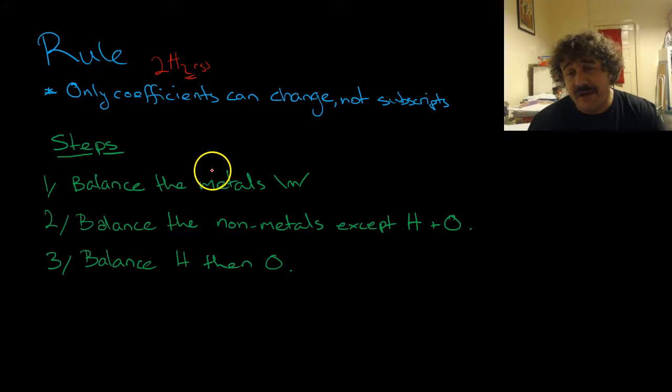Alright, so our steps are: balance the metals, then we balance the non-metals, then we balance the hydrogens, and we finally balance the oxygens. These are the simple steps, they're so easy, it's just a process. There is nothing magical about balancing equations. It is a simple process that if you practice it enough, you'll get used to it, just step by step by step, every time.